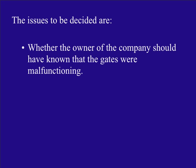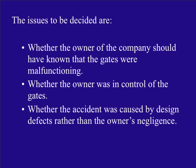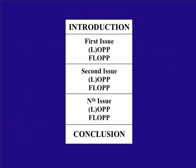To a beginning like that, you would add the issues, perhaps in bulleted form: whether the owner of the company should have known that the gates were malfunctioning, whether the owner was in control of the gates, and whether the accident was caused by design defects rather than the owner's negligence. If we convert these issue statements into questions and use them as headings, we're going to produce a judgment or a pleading that's extremely user-friendly.